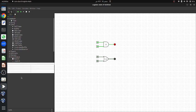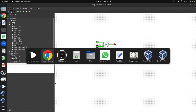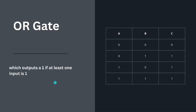Now let's simulate the OR gate and see how the results work. First, let's look at the truth table: if either input is 1 the output of the OR gate will be 1. If both inputs are 0 the output will remain 0. Let's simulate the design and verify whether our truth table is correct.